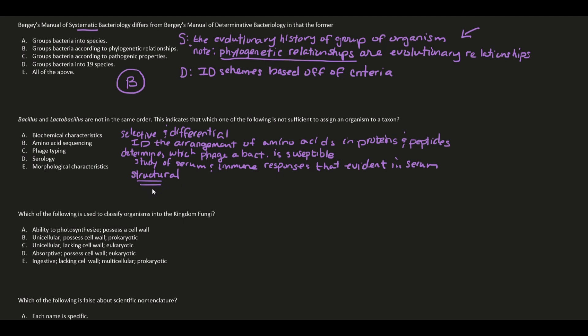For example, there can be two organisms that may look the same underneath a microscope but may differ in metabolic or physiological properties — knowing just the structure isn't good enough. Going back to the question: Bacillus and Lactobacillus are not in the same order, indicating that morphological characteristics are not sufficient to assign an organism to a taxon. The answer is E.